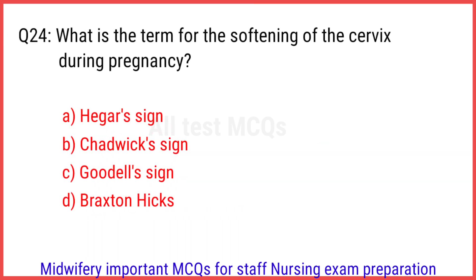Q24. What is the term for the softening of the cervix during pregnancy? The right answer is option C: Goodell's sign.